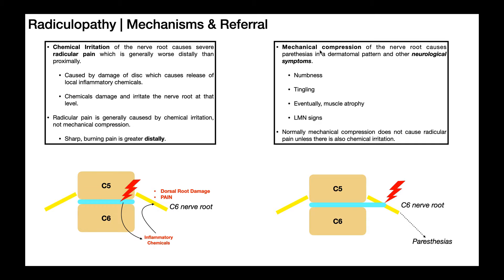Radicular pain is just pain. When somebody has a radiculopathy, they're going to have neurological symptoms. These are going to be paresthesias that occur in a dermatomal pattern, weakness in a myotomal pattern, and then potentially alterations in reflexes — those are neurological symptoms. Many times when people have mechanical compression, there's actually no radicular pain — it's actually complete numbness. The mechanical compression is more the radiculopathy; chemical irritation is more radicular pain.